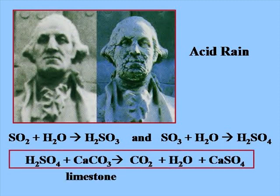The sulfuric acid that is formed rains down on the limestone or calcium carbonate and converts it to carbon dioxide, water, and soluble calcium sulfate, which is why the statue begins to fall apart.